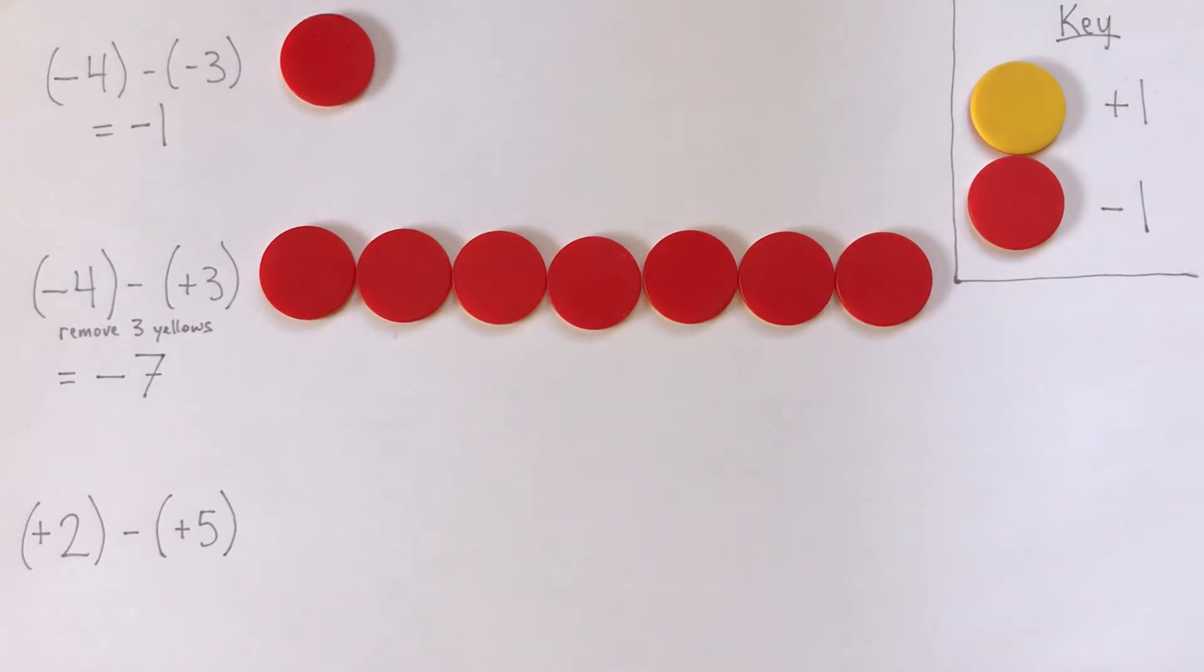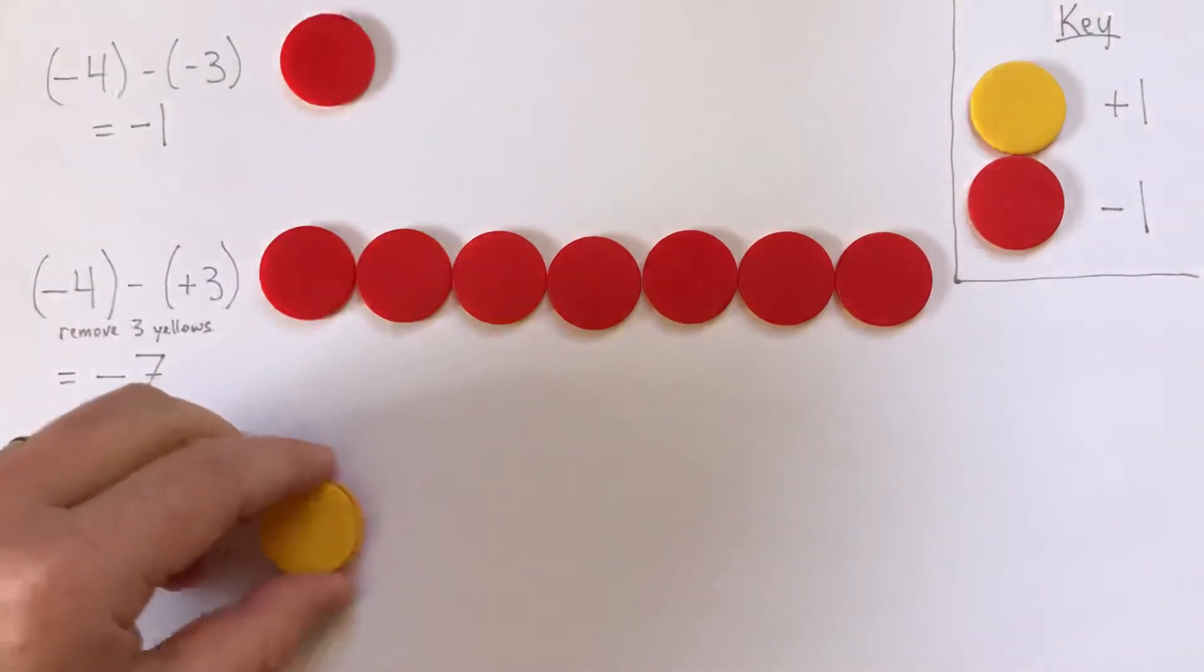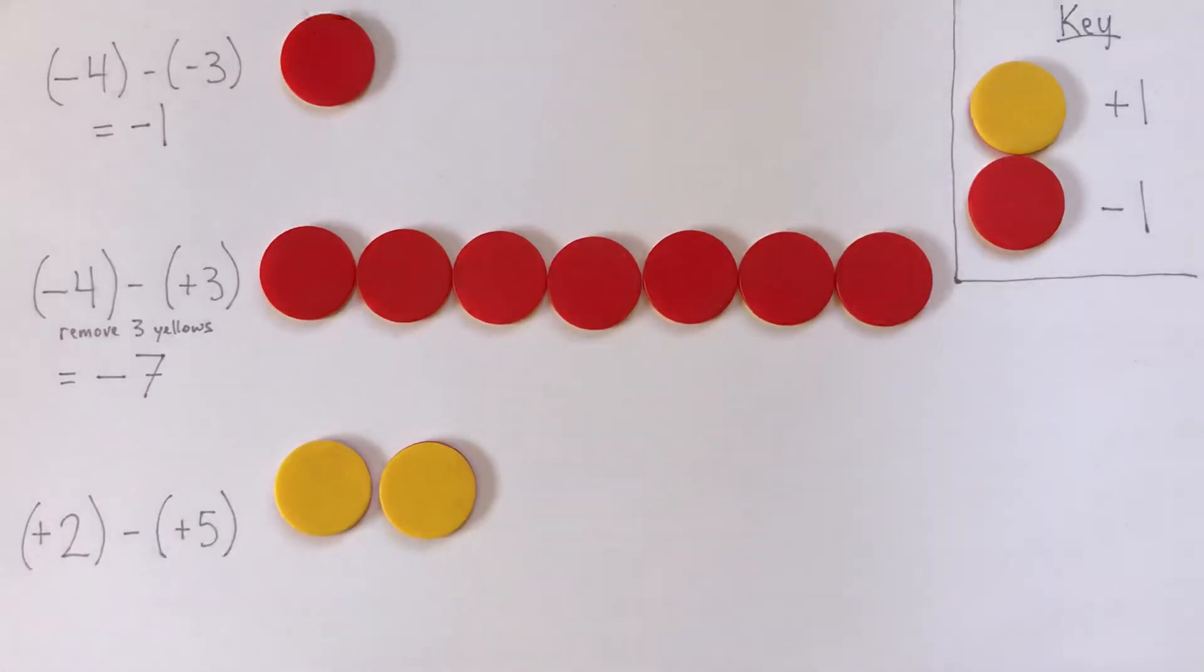Let's take a look at another example. Positive 2. And I'd like to subtract positive 5. So here's, well, if you look at it, you think, I can't subtract positive 5.